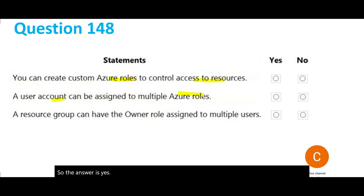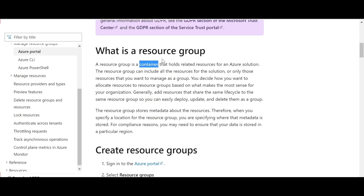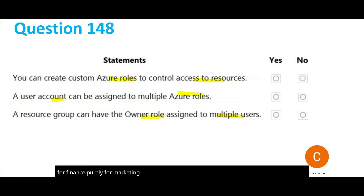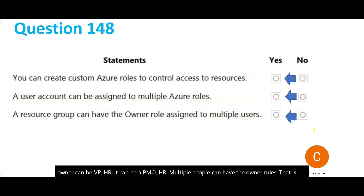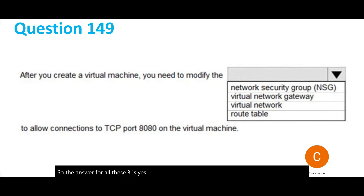The third statement says a resource group can have the owner role assigned to multiple users — yes, the answer is Yes. A resource group is a container that holds related resources. For example, in an organization you might have HR, Finance, and Sales teams, each with their own resource group. The owner role can be assigned to multiple people — for the HR resource group it could be the VP of HR or a PMO. So the answer for all three statements is Yes.